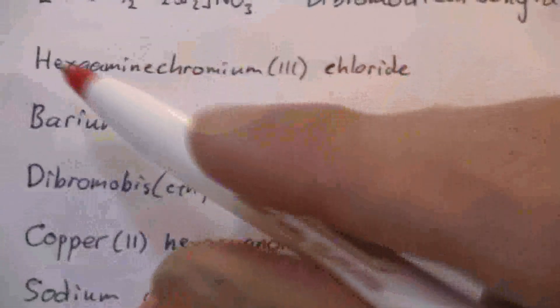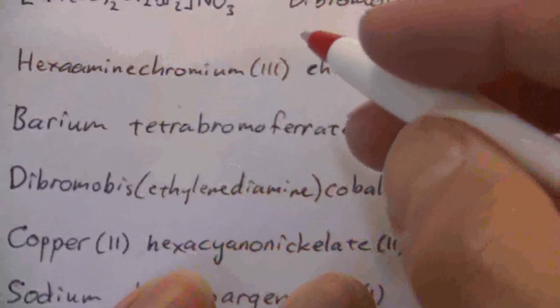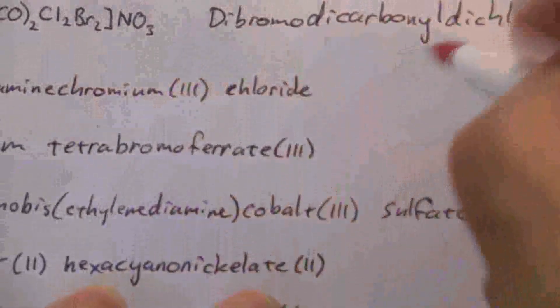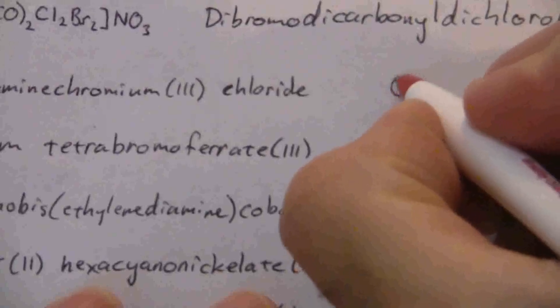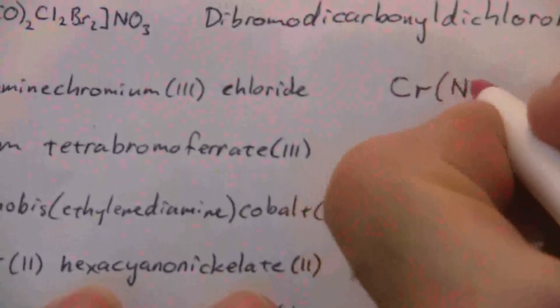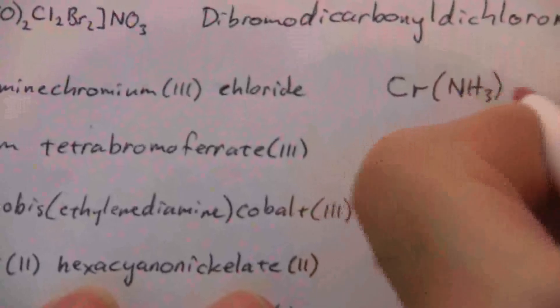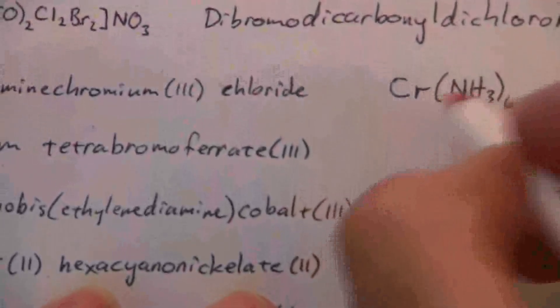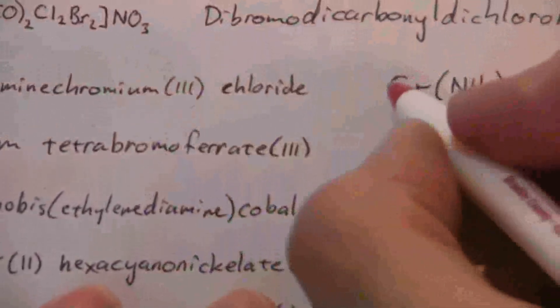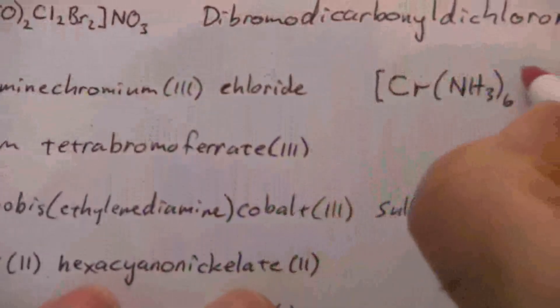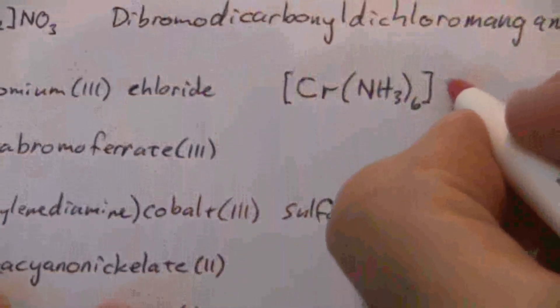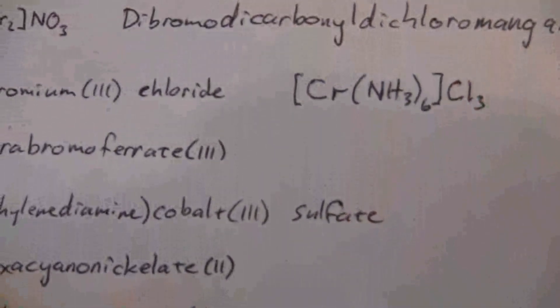So hexamine - amine is ammonia - and this is a chromium(III), so we know that we have chromium and then it's hexamine, so there's six amines or six ammonia, and that's a positive three. So there's our cation with a positive three charge, which means we have to have three chloride to balance that out.